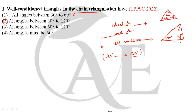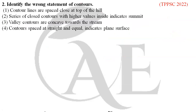Next question: identify the wrong statement about contours. Statement 1 — contour lines are spaced close at the top of a hill — this is correct. Statement 2 — a series of closer contours with higher values inside indicates a summit — this is also correct, since higher values inside the circle indicate a summit, while lower values indicate a depression.